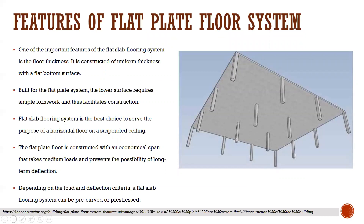Features of flat plate floor system. One of the important features is the floor thickness — it is constructed of uniform thickness with a flat bottom surface. The lower surface requires simple formwork and thus facilitates construction. Flat plate flooring is the best choice for horizontal floors with a suspended ceiling. It is constructed with an economical span that handles medium loads and prevents long-term deflection. Depending on the load and deflection criteria, a flat plate flooring system can be pre-curved and pre-stressed.